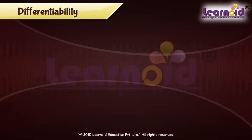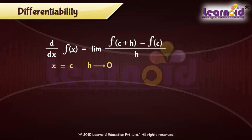In previous class, we have studied that the derivative of a real function f at point c in its domain is defined by d by dx of f(x) at x equals c is equal to limit h tends to 0 of f(c+h) minus f(c) divided by h.